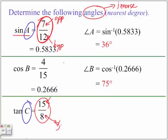And the last example here, we're going to divide 15 by 8, and the answer we get is 1.875, so that will be our ratio, so our angle C is equal to the inverse of tan times 1.875, which will give us an angle of angle C being 62 degrees.